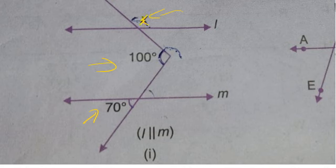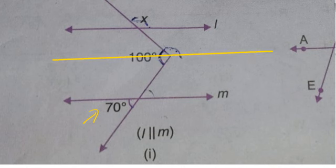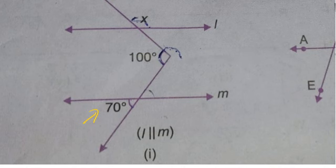Now, we need to draw a straight line through this 100 degree angle — not a transversal, just a straight line like this — because without it we cannot determine the value directly.